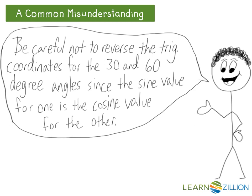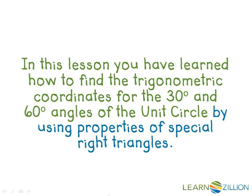Be careful not to reverse the trig coordinates for 30 and 60-degree angles, since the sine value for one is the cosine value for the other. In this lesson, you have learned how to find the trigonometric coordinates for the 30 and 60-degree angles of the unit circle by using properties of special right triangles.